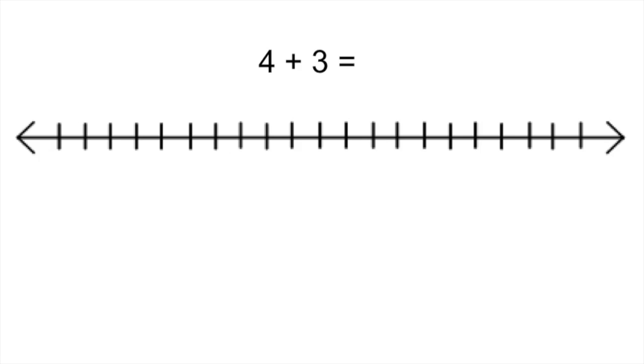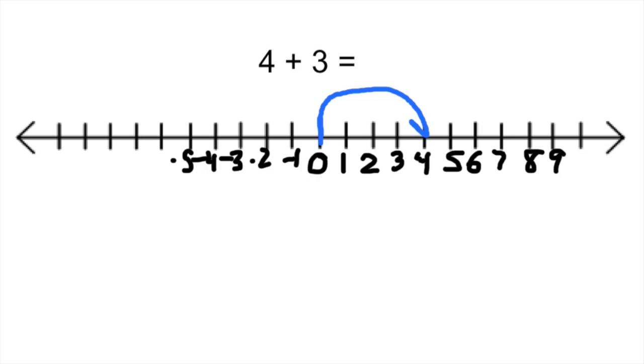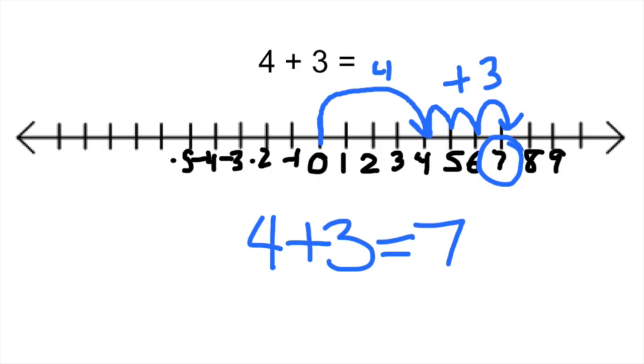Now, using integer chips is fine for adding and subtracting integers, but we can also use number lines. To model 4 plus 3, you start at 0 and go to the first number, which is 4, and then you think about adding 3. So should you go up or down 3? Well, we need to add 3. We're going to go up 3, and we will end up at 7. You already know this. 4 plus 3 is 7.